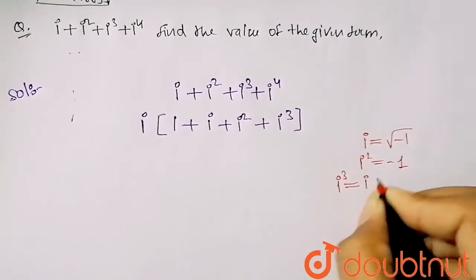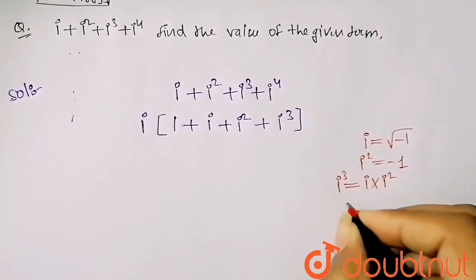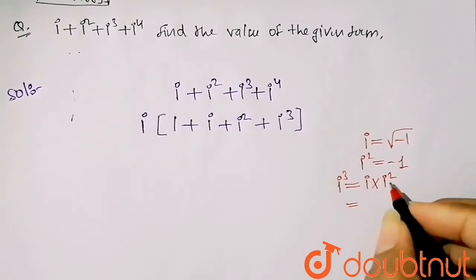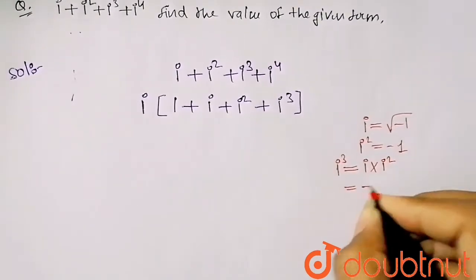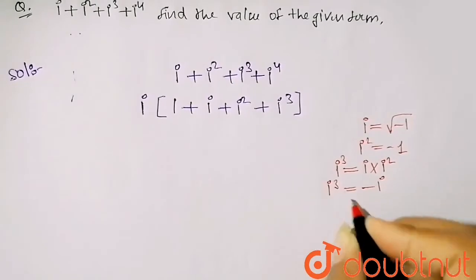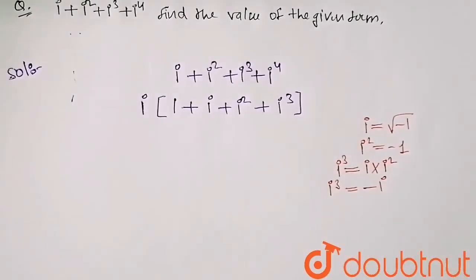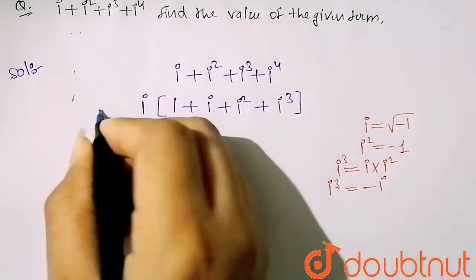And here my value of iota square is minus 1, so you will get minus iota. So iota cube is equals to minus iota.